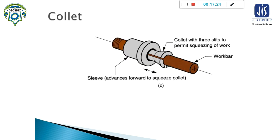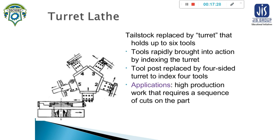There is a special type of lathe called turret lathe. In the turret lathe, the tailstock is replaced by a turret that can hold up to six tools, and these tools are rapidly brought into action by indexing the turret. The tool post is replaced by a four-sided turret to index four tools. The application of the turret lathe is for high production work that requires a sequence of cuts on the part.